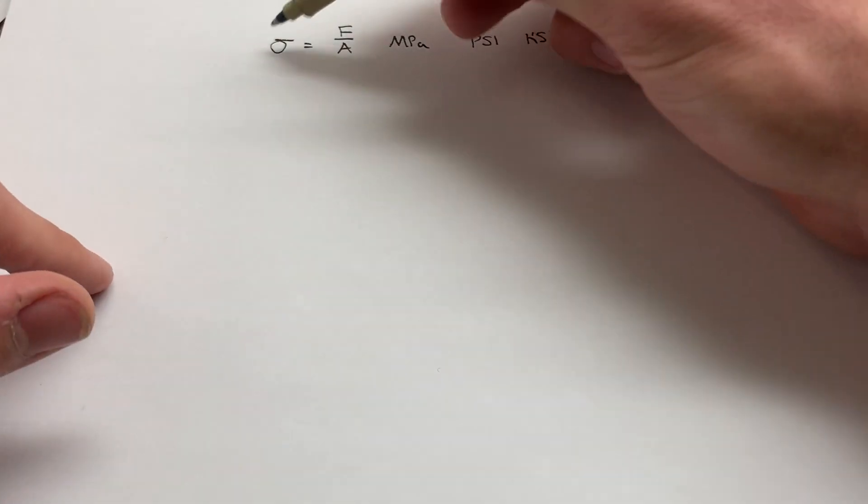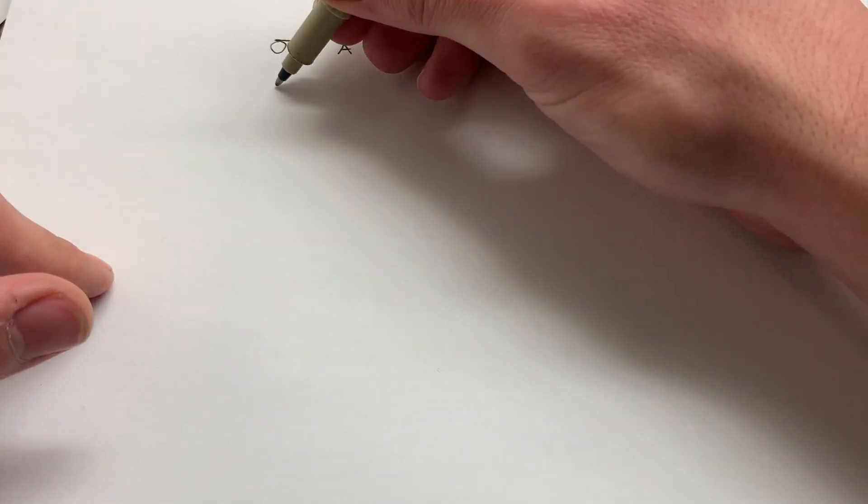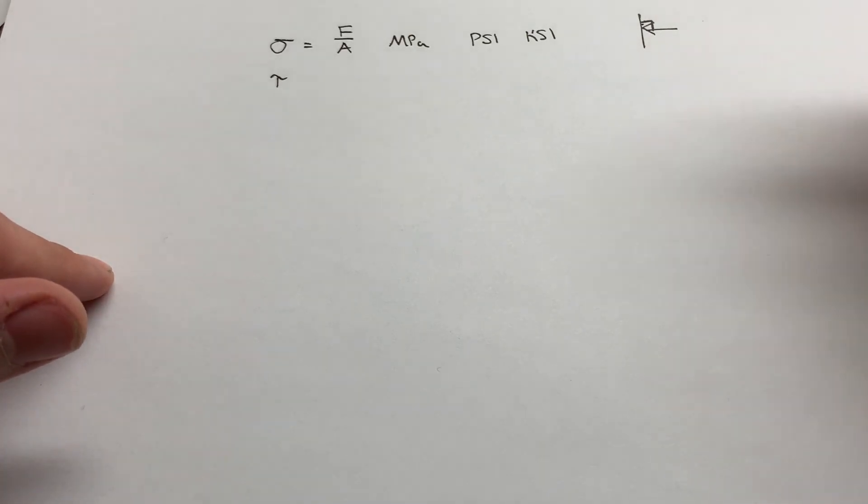So if we go in here and look at this, we have two types of stresses: normal and shear stresses. Normal stresses are the ones that we use for sigma. Shear are represented by tau. Normal, as the name implies, act normal to a surface. You could draw a 90-degree angle. Shear stresses act parallel to the surface.